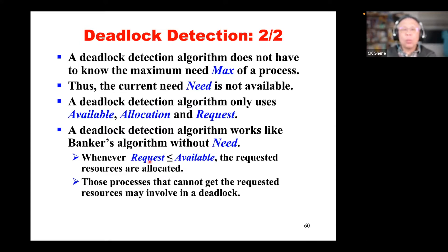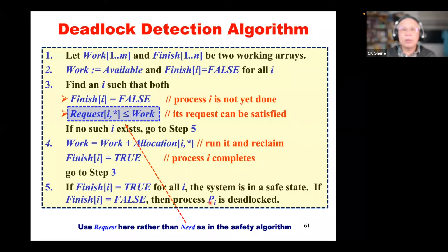A deadlock detection algorithm does not have to know the maximum need of a process. Because we don't know max, we are not able to compute need. As a result, a deadlock detection algorithm only uses: available — indicating how many units of each resource type is available; allocation — for each process, how many units of each resource type it has received; and request — how many units of each resource type a process has requested.